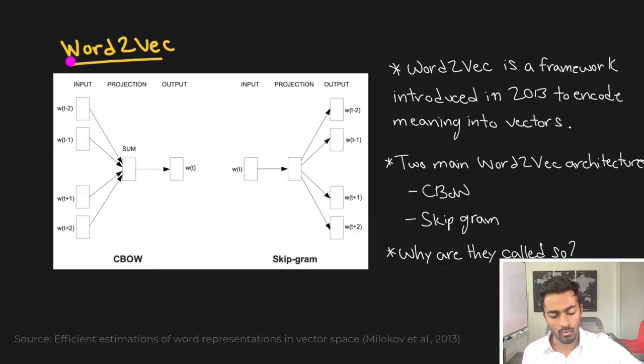About a decade later in 2013, Word2Vec was introduced. Word2Vec is a framework that tries to create those dense continuous vectors, and it does so with two main architectures: the continuous bag of words architecture and the continuous skip-gram architecture.